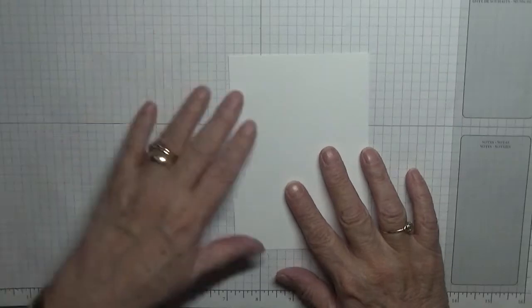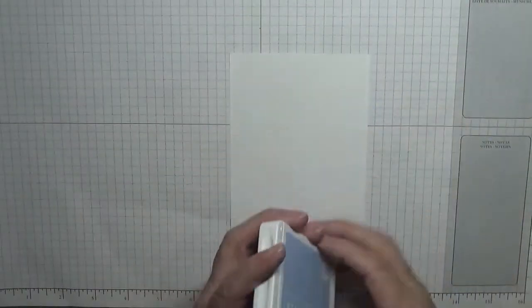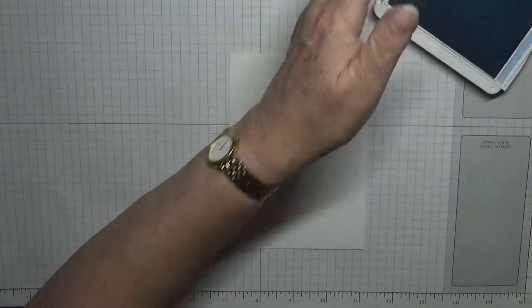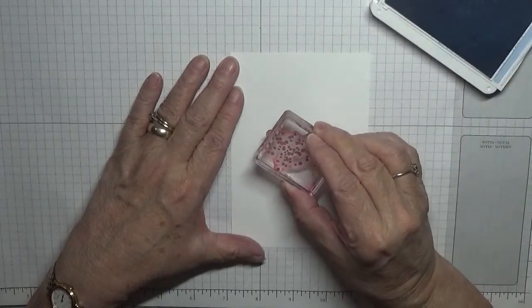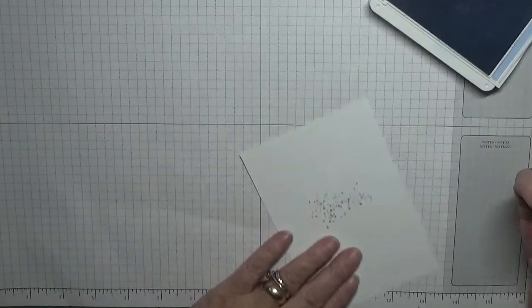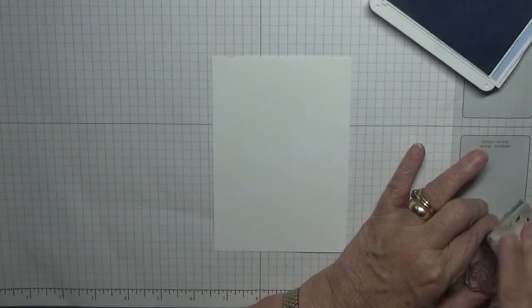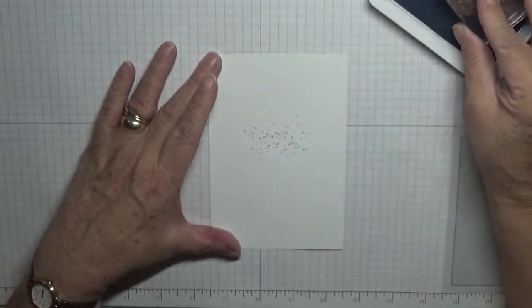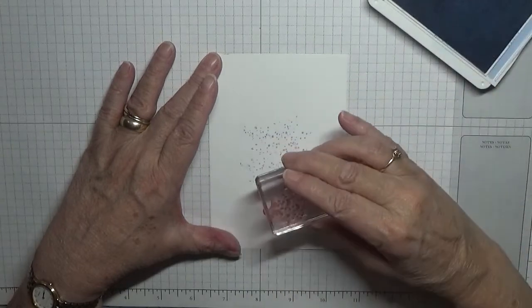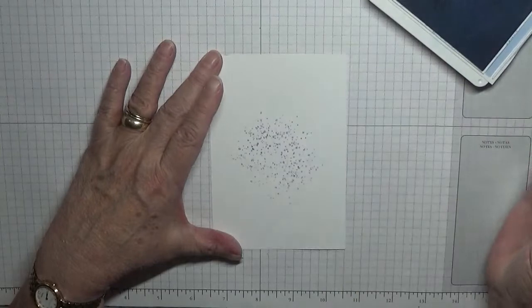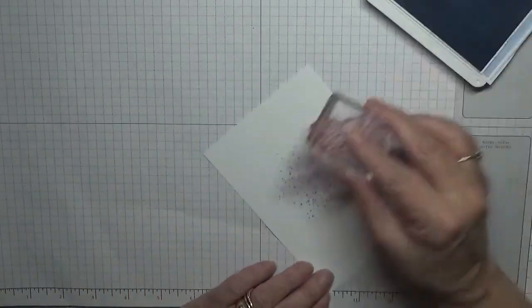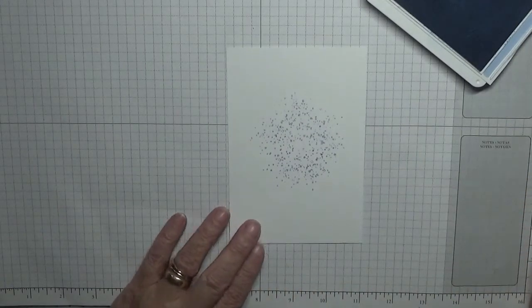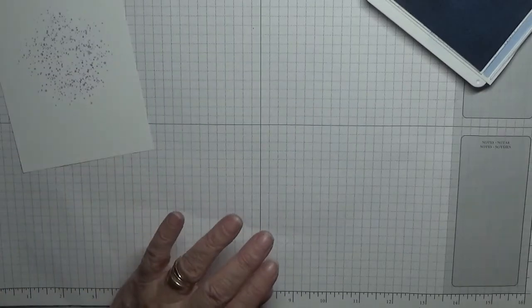To get started we'll do our splashes. And we're using seaside spray. And all I'm doing is putting some dots. Oh, I never cleaned that after my last time. I think I used melon mambo last time. Now it is clean. I think that's enough for the flower. If we need any more we'll come back to it.